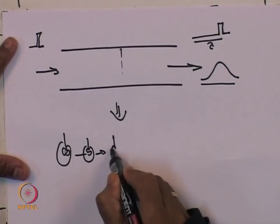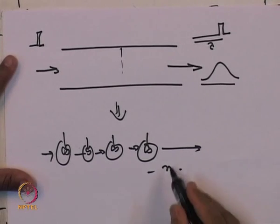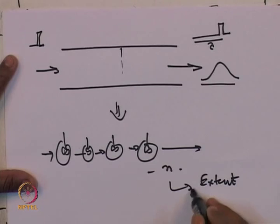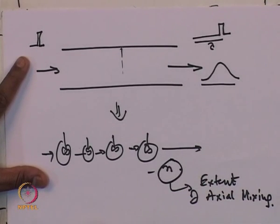To characterize this extent of back mixing, we look at it as a series of small CSTRs — n number of CSTRs — and this n characterizes the extent of axial mixing. So n is a parameter: for a given tubular reactor, if I say I have n CSTRs in series equivalent to this tubular reactor, then n becomes a parameter. n can be 1, 2, 3, 4, 5, 6, up to infinity. Infinity means it is a plug flow reactor, and n equal to 1 means it is a CSTR. In between, you have partial back mixing: large n means less mixing, small n means more back mixing.